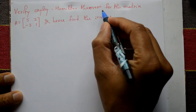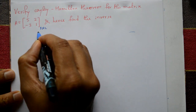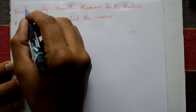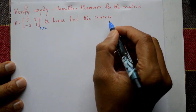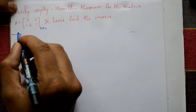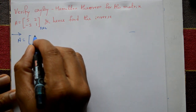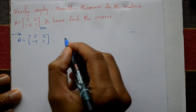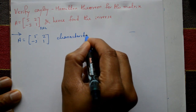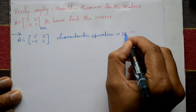Verify the Cayley-Hamilton theorem for the matrix A of order 2×2, and hence find the inverse. First verify the Cayley-Hamilton theorem and find the inverse of matrix A. The given matrix A is equal to [[5, 2], [-3, 1]].